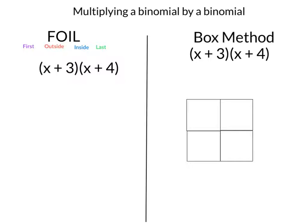Hello and welcome. Today we're going to look at multiplying a binomial by a binomial. I have two methods to show you. The first one on the left side of my screen is called FOIL, which stands for First, Outside, Inside, and Last. On the right side of the screen you're going to see what's called the box method, where you draw a box and use it as a graphic organizer to help you solve the problem. Both methods work, so you can look at each and decide which one works better for you.